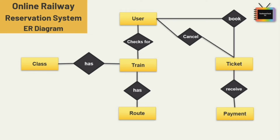Now let's see the cardinality ratios between these entities. One user can book and cancel many tickets. For one ticket there will be one payment or one total amount. One user can check different train information and availabilities. One train has different classes like general, sleeper, two-tier, three-tier, etc. For train and routes, many trains can travel on one route.